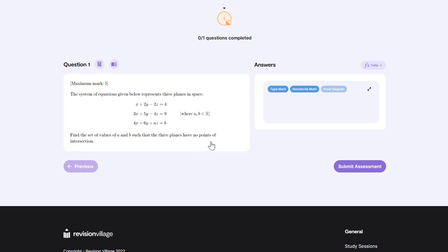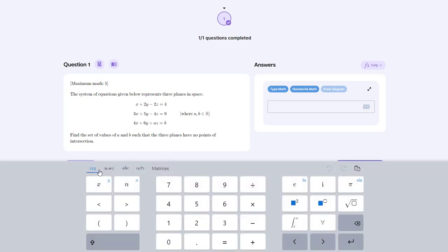First of all we'll look at using matrices with the online keyboard. If I go into the answer box and select type math I have a box where I can enter an answer with a keyboard icon at the end.